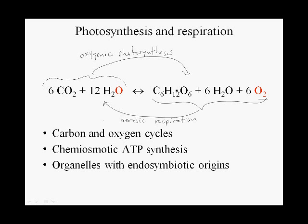But for now, oxygenic photosynthesis and aerobic respiration are the predominant forms of photosynthesis and respiration on Earth. And they are responsible for carbon and oxygen cycling — the global carbon and oxygen cycles.